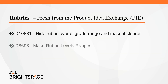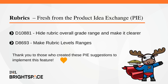This feature implements the following PI items: D10881, hide rubric overall grade range and make it clearer; and D8693, make rubric level ranges. Thank you to those who put in this PI suggestion to implement this feature.